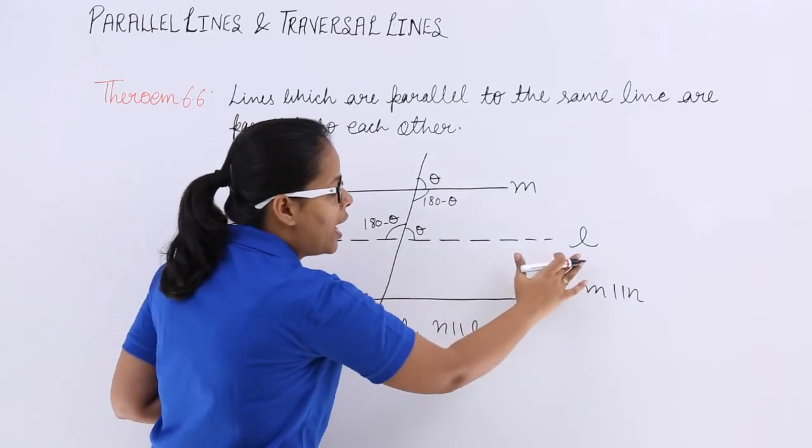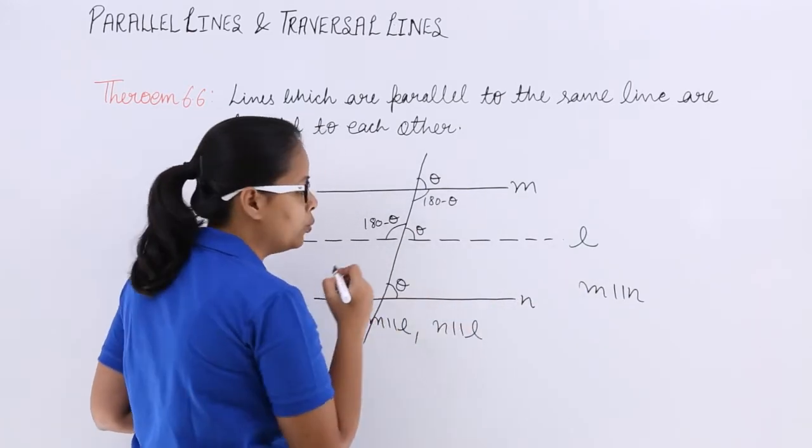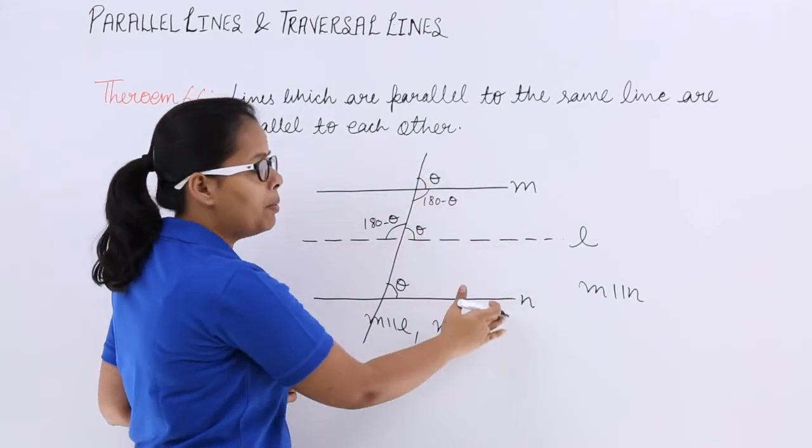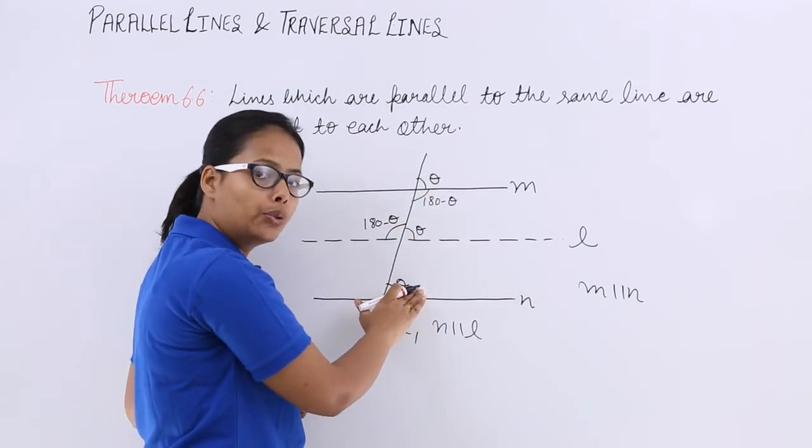And now you know that l is parallel with n. So this angle will be theta too. As l is parallel with n, now you can see here that m will be parallel with n, as this is theta and this is coming out to be theta too.